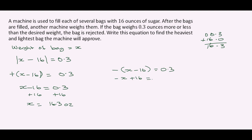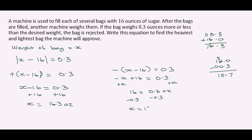For the second equation, minus x plus 16 equals 0.3. Adding x to both sides gives 16 equals 0.3 plus x. Subtracting 0.3 from both sides: 16.0 minus 0.3 equals 15.7, so x equals 15.7 ounces. So 16.3 is the heaviest and 15.7 is the lightest bag the machine will approve.